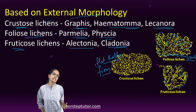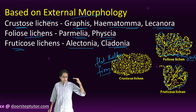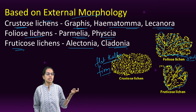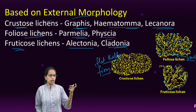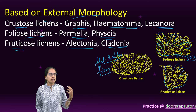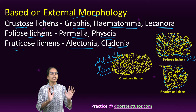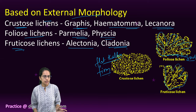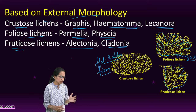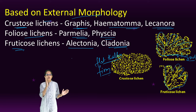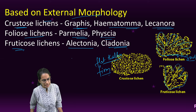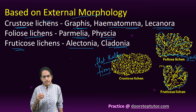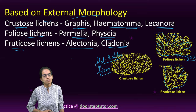So, two classifications of lichen: one based on the fungal component — Ascomycetes, Deuteromycetes, and Basidiomycetes; the other based on external morphology — Crustose, Foliose, or Fruticose. Crustose is crust-like, Foliose is leaf-like, and Fruticose is a shrub-like cylindrical branched structure. The examples of these are important — there could be a match-list question where you are asked which lichens belong to which external morphology category. Remember the examples carefully. Thanks for joining us.